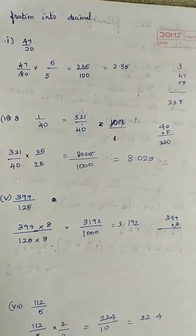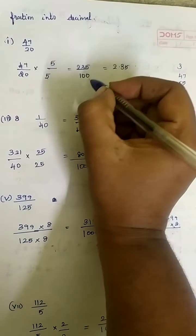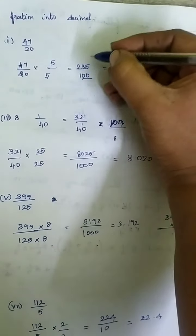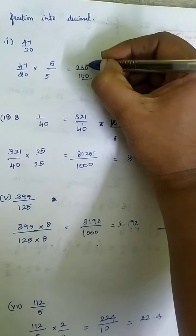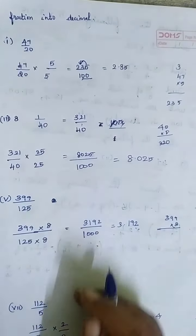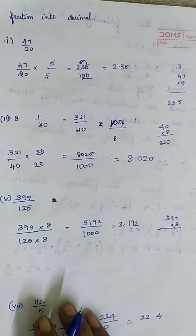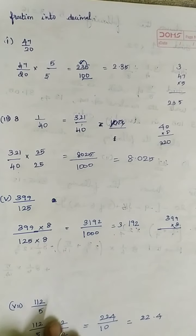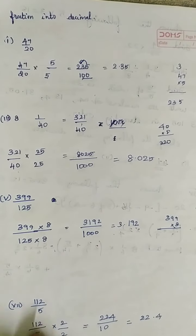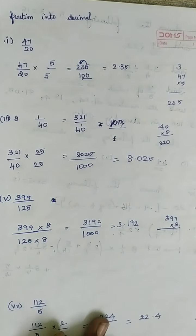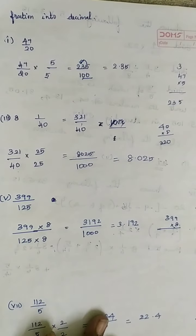Now you have two zeros in 100. So in the numerator you will move two digits towards the left and place the decimal point. 2.35 is your answer. So whatever multiplication you do, you have to do it in your rough column.